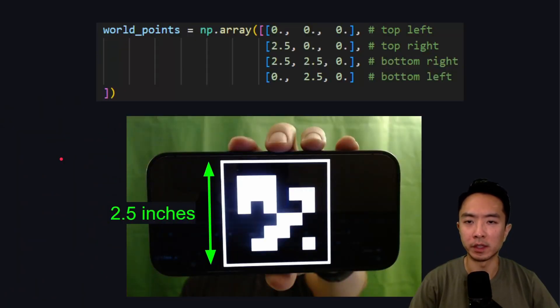One thing we need to do next is we have the OBJ file, which is some size, and we have our marker, which is some other size. We need to figure out how to make the size make sense so that when we project it onto our world, it doesn't look too big or too small. Here we see that this is our ArUco marker. We measured it to be about 2.5 inches.